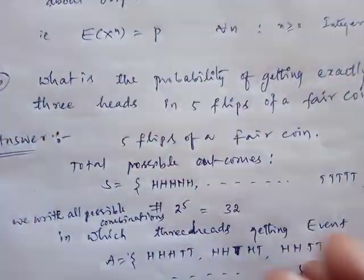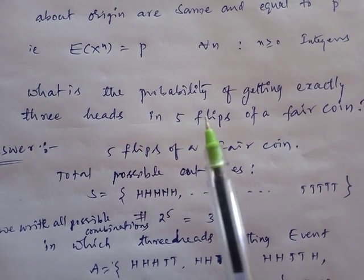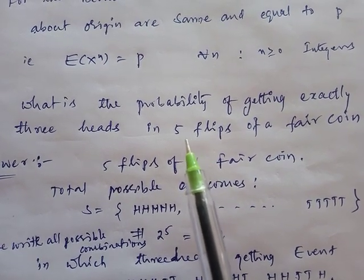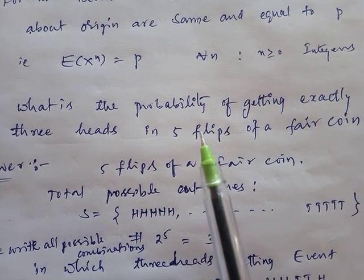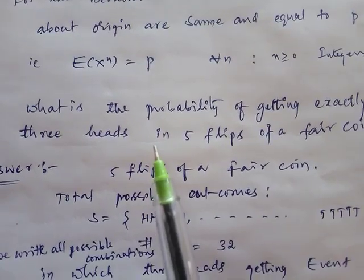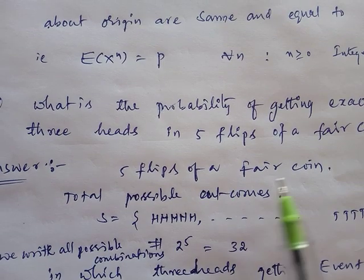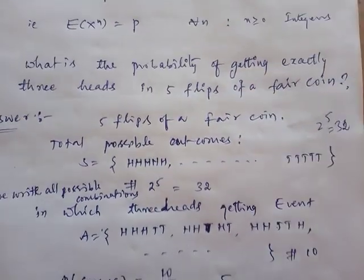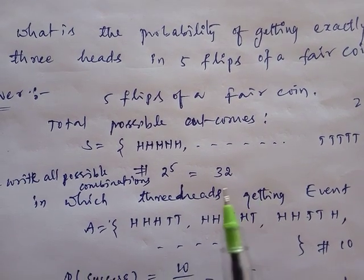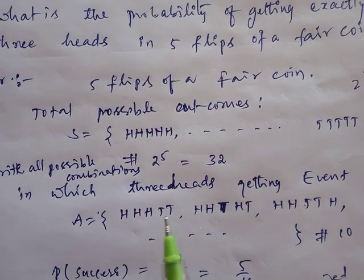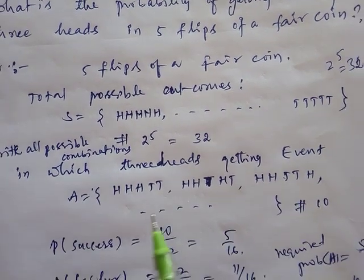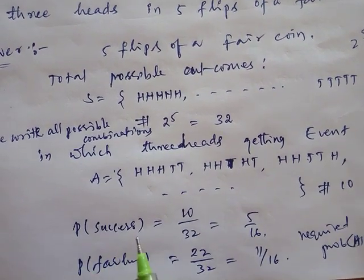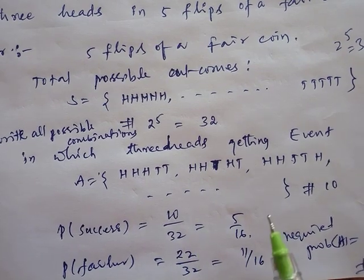Another problem: what is the probability of getting exactly three heads in five tosses of a coin? Total possible outcomes = 2^5 = 32. The favorable outcomes are all arrangements with exactly three heads (and two tails). The total number of such outcomes is C(5,3) = 10. So the probability of success = 10/32 = 5/16.